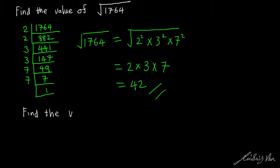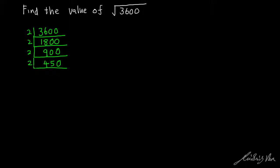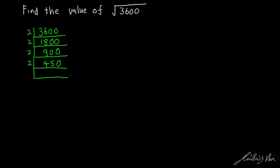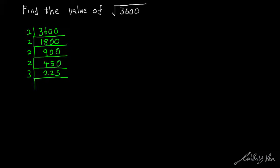The last example is square root of 3600. 3600 is divisible by 2, so we divide it by 2 to get 1800. 1800 divided by 2 gives us 900. 900 divided by 2 gives us 450. 450 divided by 2 — we can use our calculator — gives us 225. 225 cannot be divided by 2, so we divide by 3 to get 75. 75 divided by 3 gives us 25. 25 divided by 5 gives us 5, and 5 divided by 5 gives us 1.